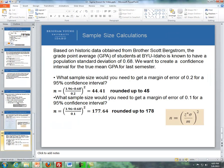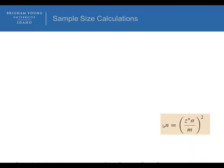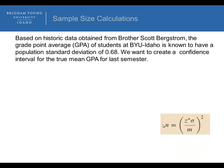Here's an example. Based on historic data obtained from Brother Scott Bergstrom, the grade point average of students at BYU-Idaho is known to have a population standard deviation of 0.68. We want to create a confidence interval for the true mean GPA for last semester.